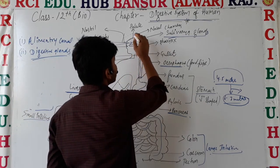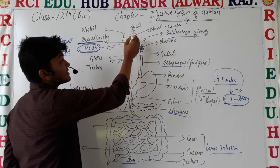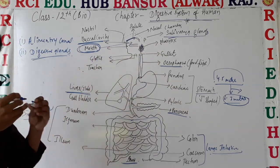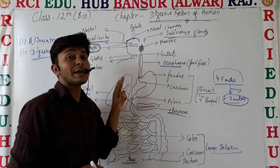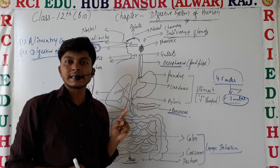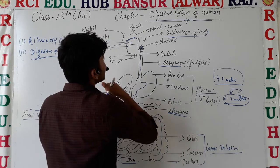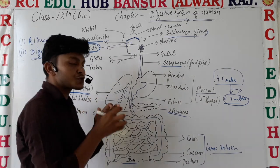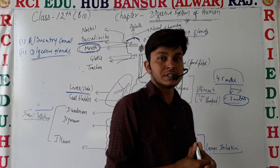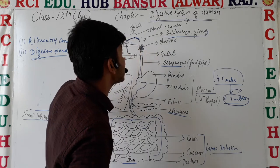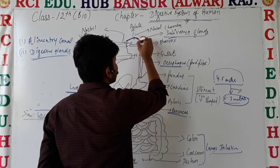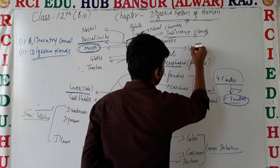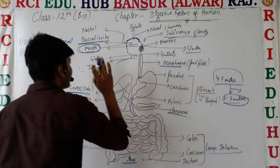Just above the buccal cavity, the palate region is found. The anterior portion of the palate is bony, consisting of two types of bones — the maxilla and the palatine bone. The posterior area is made of cartilage (soft bone), and in that posterior area a small fold is found, which is known as the uvula.